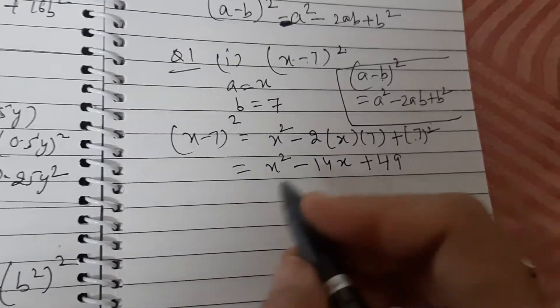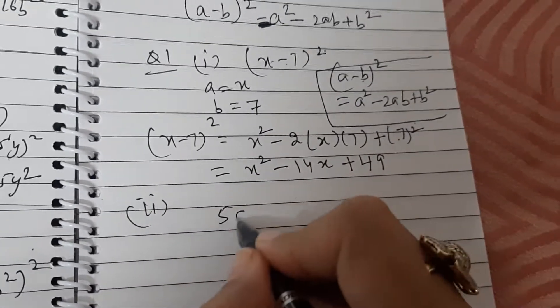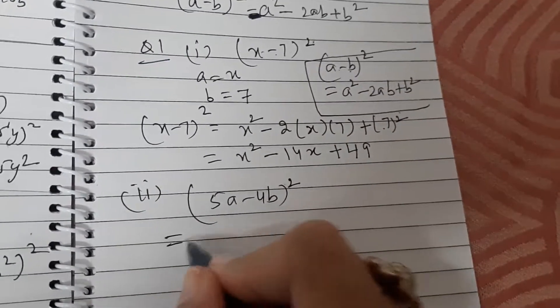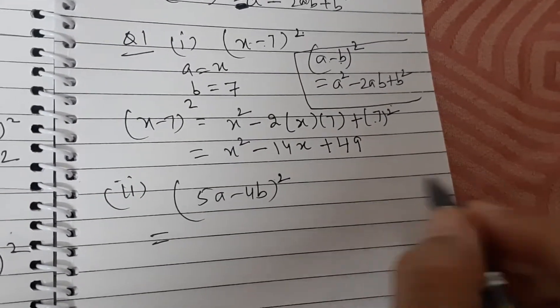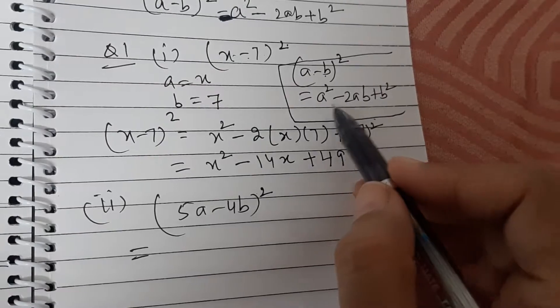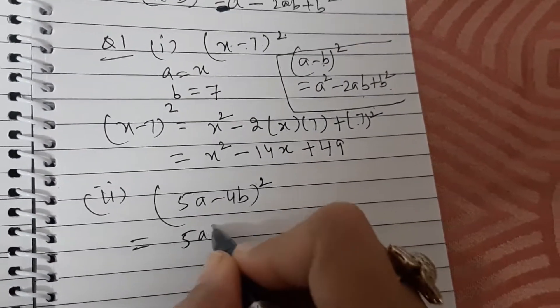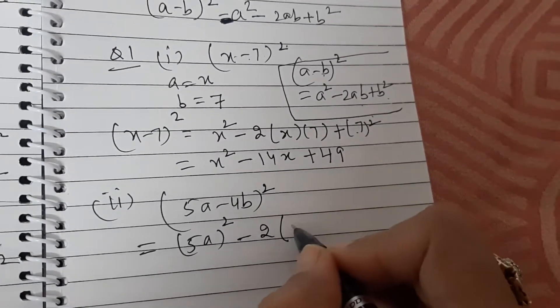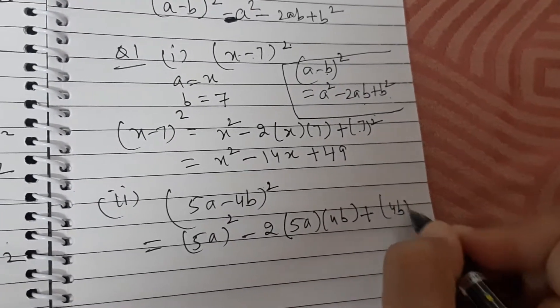Let us do another question: 5a minus 4b whole square. So this will be equal to—you have to write that using the algebraic identity a minus b whole square is equal to a square minus 2ab plus b square. We get this is equal to 5a whole square minus 2 into 5a into 4b plus 4b whole square.